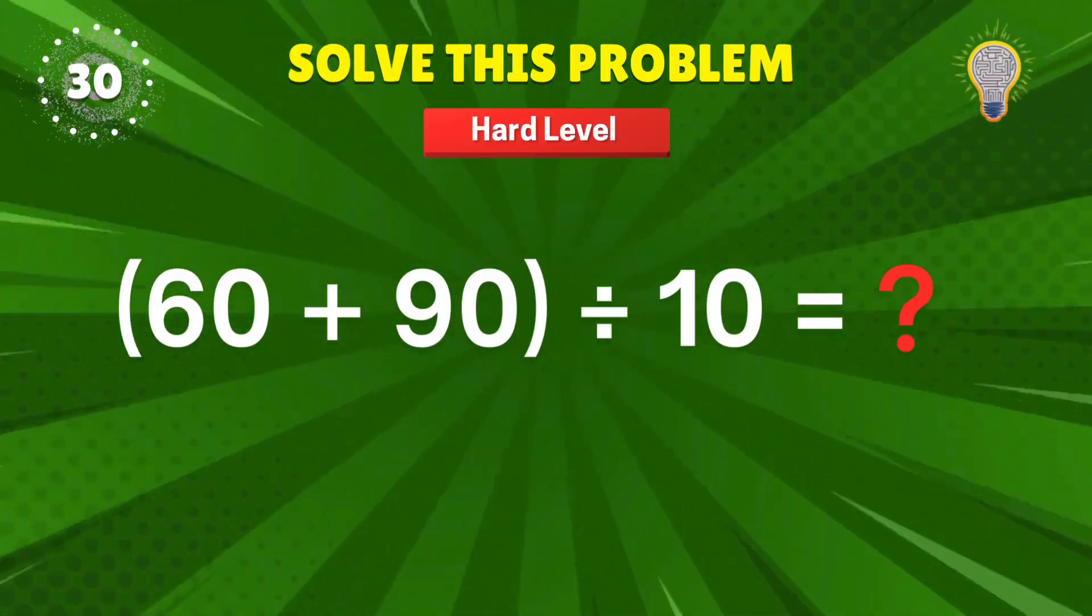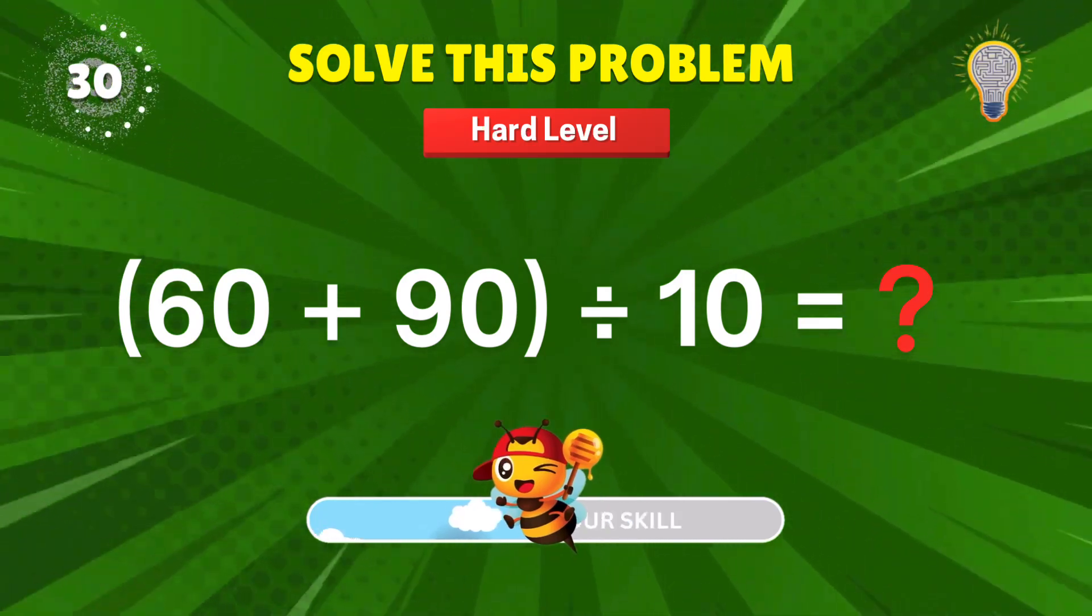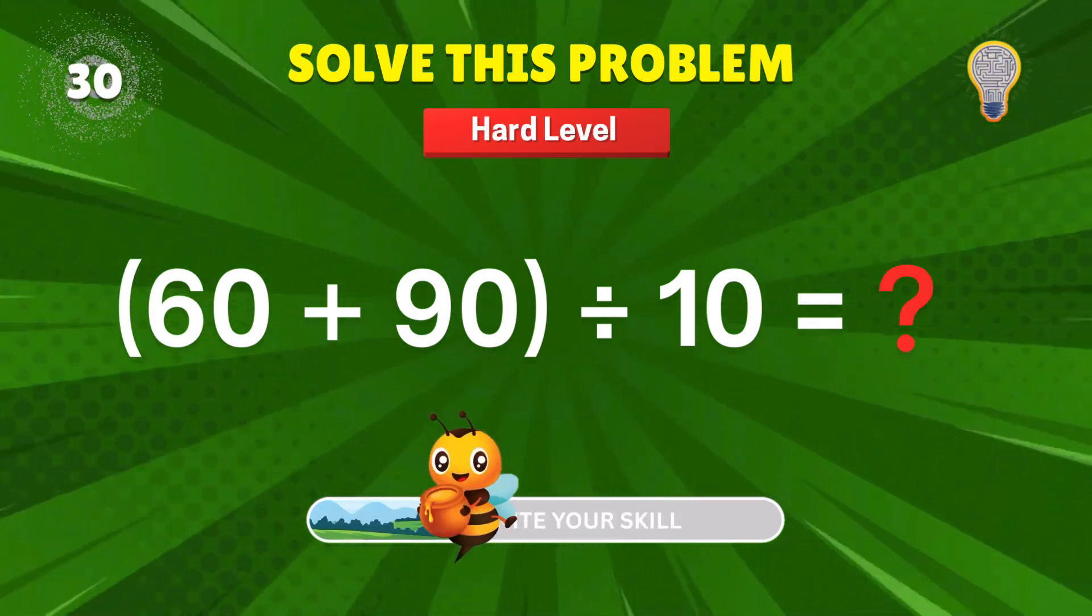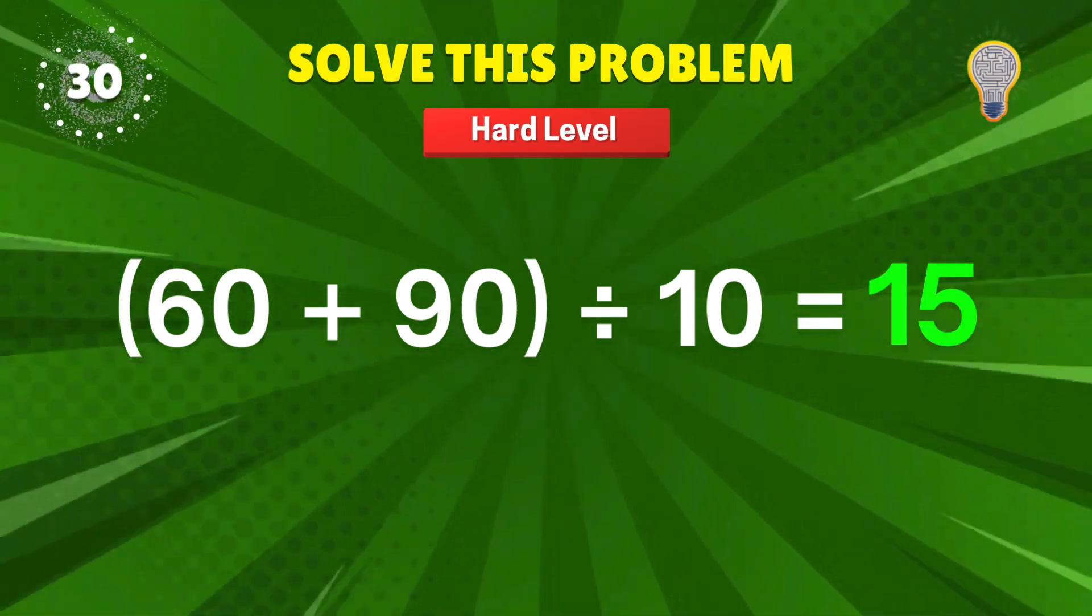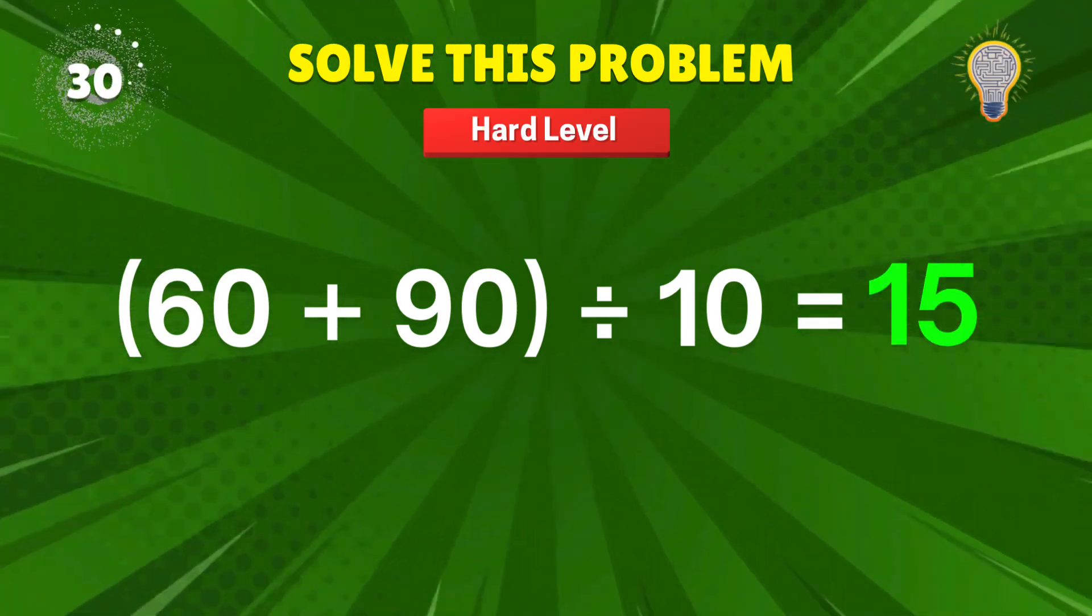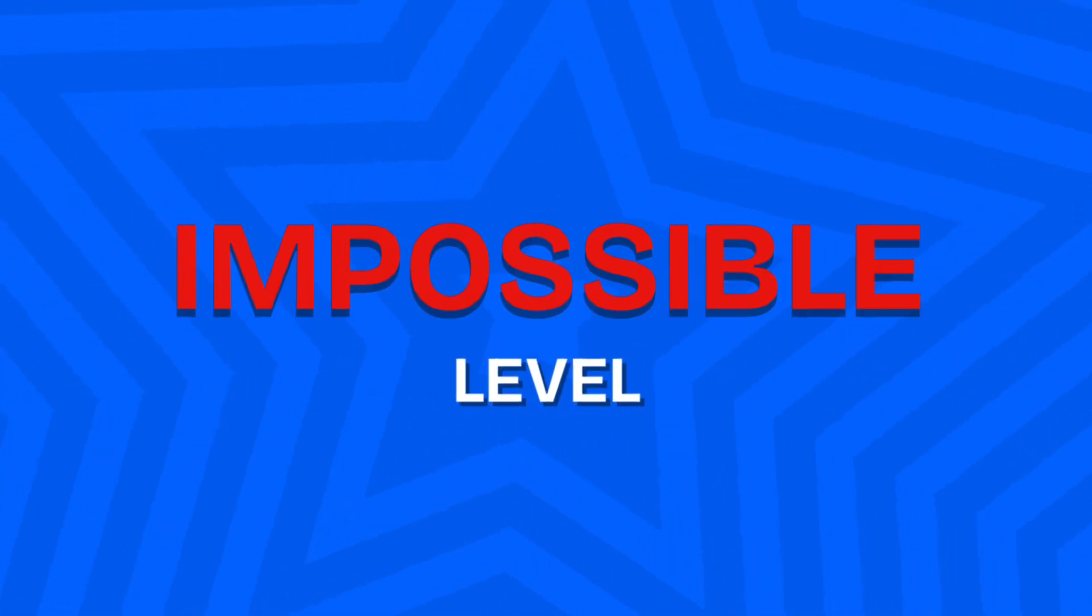60 plus 90? Divided by 10? Add it, then chill. 15. Smooth math move. Score plus 1. This round separates the tourists from the legends.